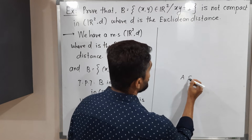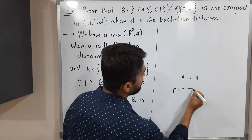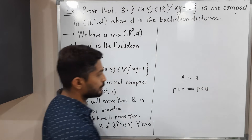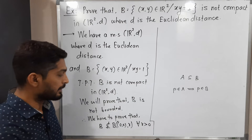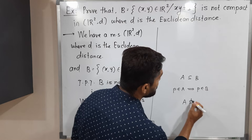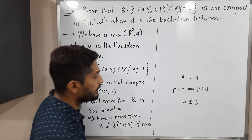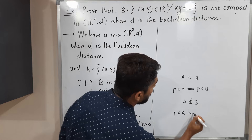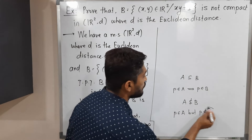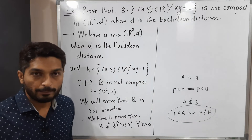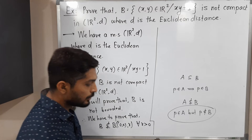The technique to prove one set is a subset of another is to take any arbitrary point from the first set and prove it is in the second set. But here we have to prove the set is not a subset, so we need to find some point P that belongs to B but does not belong to the ball. If we find one such point which is in B but not in the ball, we can say B is not a subset of that ball.